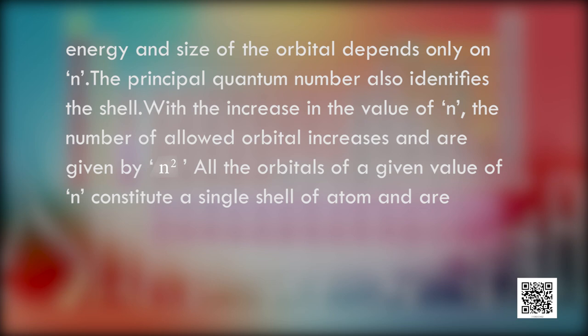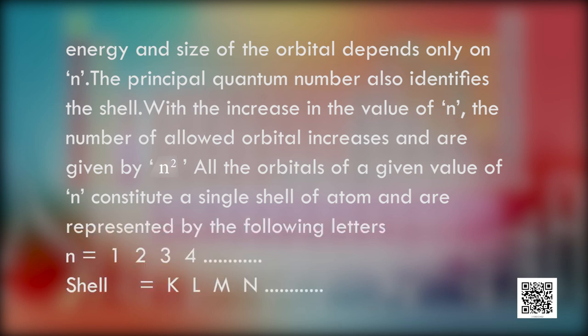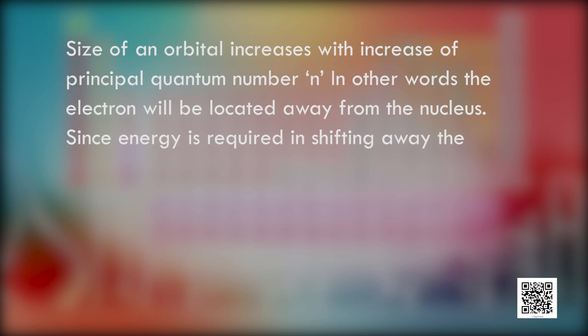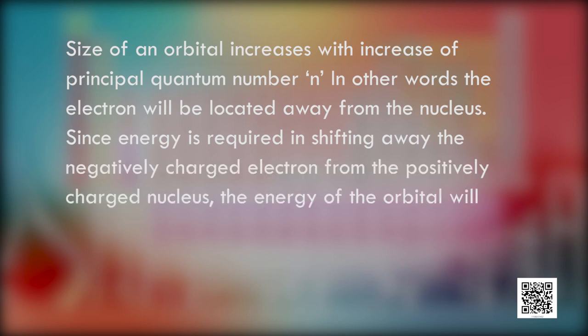Inside a shell there are orbitals, and the number of orbitals is given by N squared. All the orbitals of a given value of N constitute a single shell, represented by the letters N = 1, 2, 3, 4 or K, L, M, N. In Bohr's model, orbits were also given these names, but Bohr's orbits were circular and two-dimensional. In the quantum mechanical model, we talk of a shell that is three-dimensional. The size of an orbital increases with increase of principal quantum number N, meaning the electron will be located further from the nucleus. Since energy is required to shift a negatively charged electron away from the positively charged nucleus, the energy of the orbital increases with increasing N.